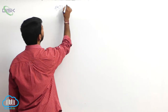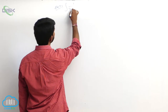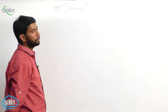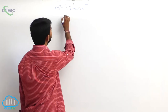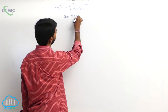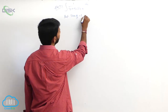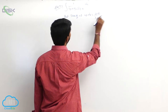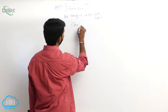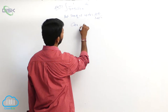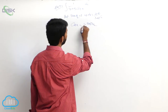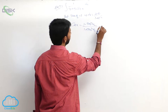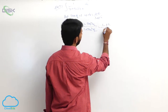Example 1: Integral of 1 by (4 plus 5 cos x) dx. Put tan(x/2) equal to t. That implies dx equals 2 dt by (1 plus t square), and cos x equals (1 minus tan square(x/2)) by (1 plus tan square(x/2)), that is, (1 minus t square) by (1 plus t square).